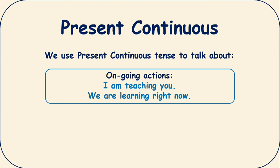Whatever you are doing nowadays, or whatever you are doing at the moment or right now, these are called ongoing actions. They refer to something that you are doing right now. It's true that I am teaching you right now and it's true that you are learning right now. That's called present continuous tense, number one use.